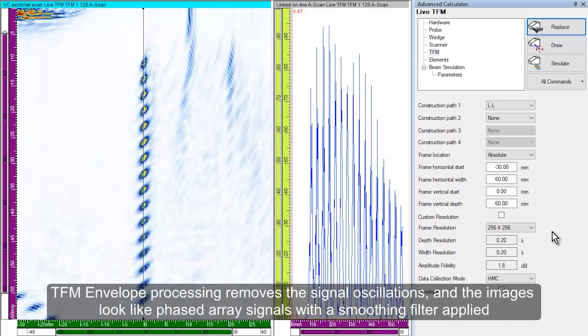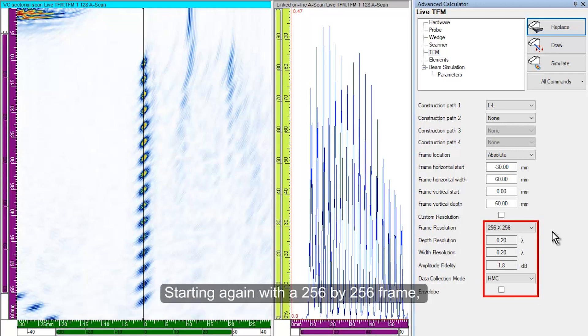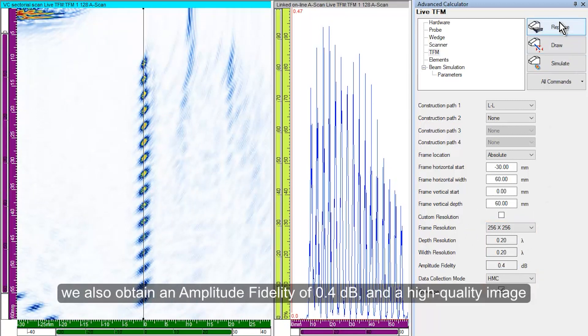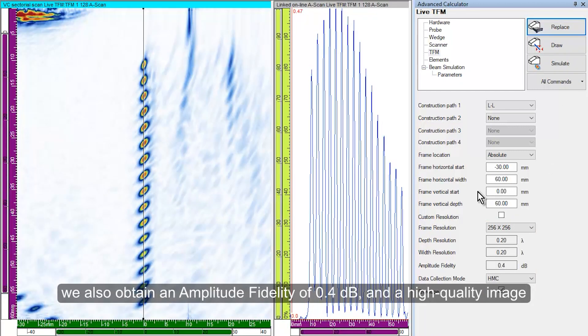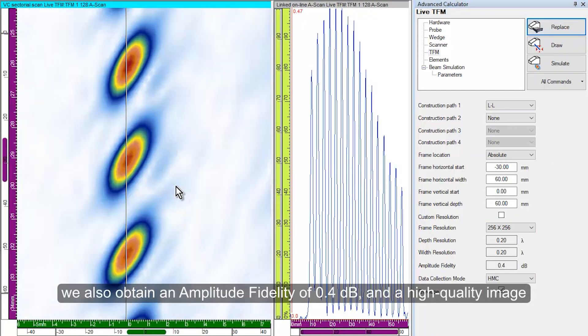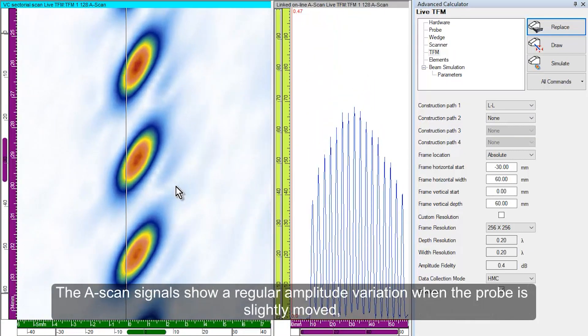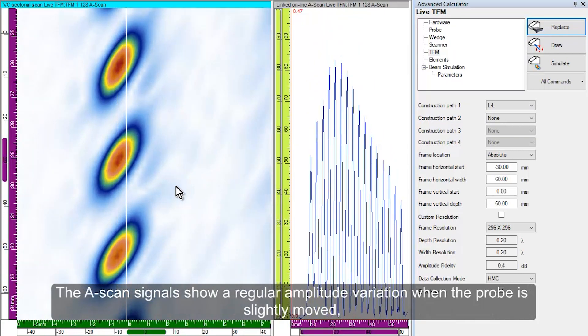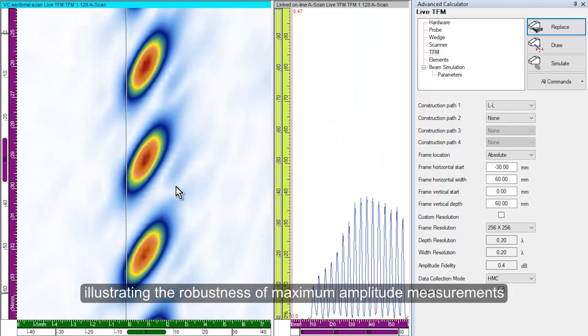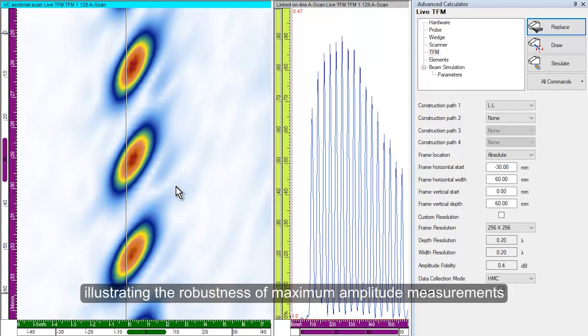TFM envelope processing removes the signal oscillations and the resulting images look like phased array signals with a smoothing filter applied. Starting again with a 256 by 256 frame and activating the TFM envelope feature, we also obtain an amplitude fidelity of 0.4 dB and a high quality image. The A-scan signals show a regular amplitude variation when the probe is slightly moved, illustrating the robustness of maximum amplitude measurements.